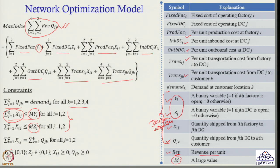The decision variables yi and zj are binary (0 or 1), while xij and qjk are continuous variables which can take values greater than or equal to 0. This is my optimization model. If I solve it for the given demand and parameter values, I will get an optimum solution. I have first solved this using Excel Solver because it is easy to visualize and understand, and then we will move into anyLogistix.